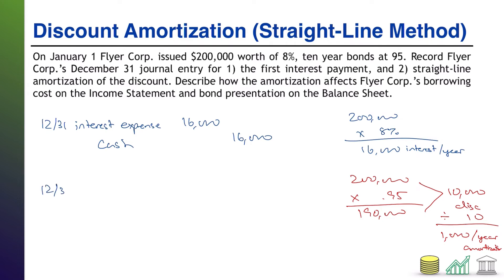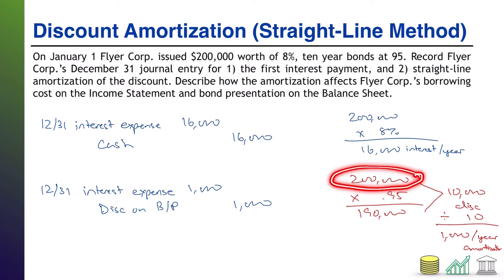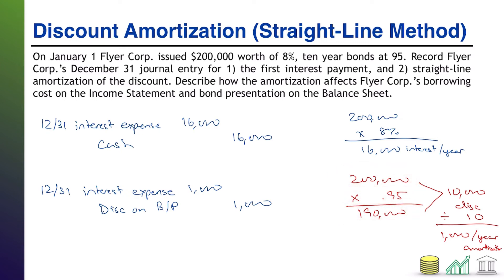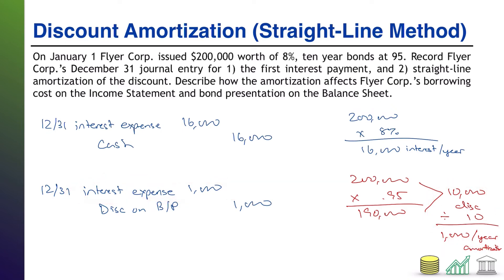The other part of our journal entry on 12/31 is to credit discount on bond payable for $1,000 — our annual amortization. The other side of this is we record additional interest expense. The reason we're recording additional cost is because we have promised to pay investors $200,000 on borrowings of only $190,000. We are going to have to pay back $10,000 more than we borrowed — that's a cost to us. By amortizing that $10,000 over the life of the bond, we are going to rack up $10,000 in interest expense to reflect that cost.